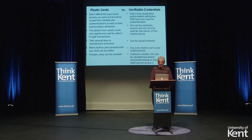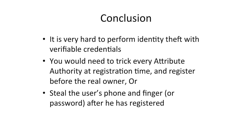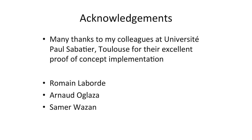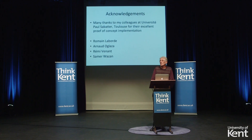In conclusion, it is very hard to perform identity theft with verifiable credentials. You would need to trick every attribute authority into issuing you a credential on behalf of someone else before that person does it, or steal the user's phone and their finger to unlock the credentials. We believe this is a very good way of going forward with secure transactions to help prevent identity theft. I'd like to thank my colleagues at Toulouse — Roman, Arno, Remy, and Samir — and thank the audience for attending.